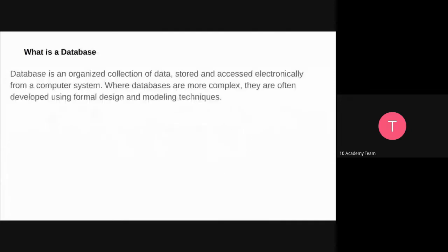So what is a database? A database is just an organized collection of data that we store and access from a computer system. It's a very organized and secure way to access our data. A database can be more complex, and they are often developed using a formal design and modeling technique.